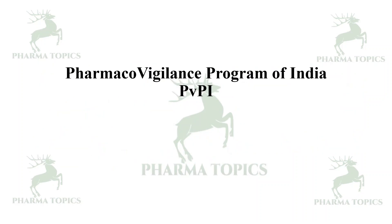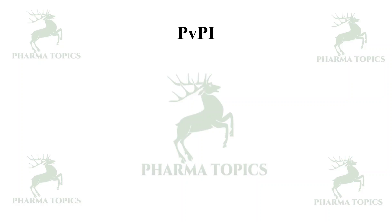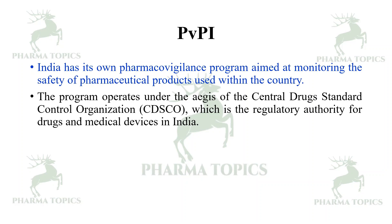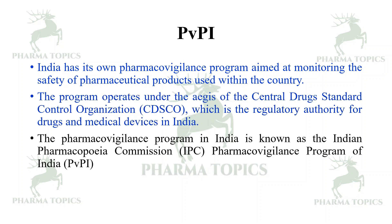Now let us see the Pharmacovigilance Program of India, called PVPI. India has its own pharmacovigilance program aimed at monitoring the safety of pharmaceutical products used within the country. The program operates under the aegis of the Central Drugs Standard Control Organization, that is CDSCO, which is the regulatory authority for drugs and medical devices in India. It is known as the Pharmacovigilance Program of India, PVPI.